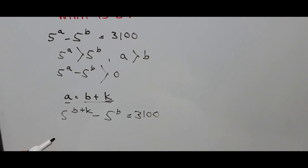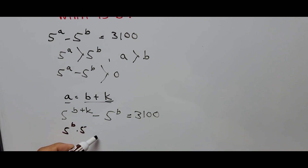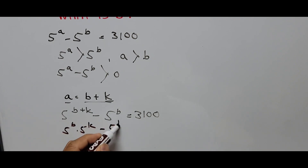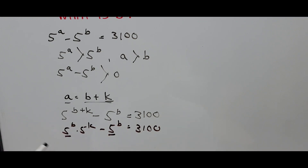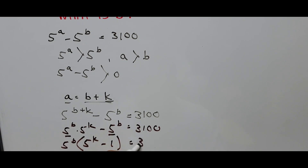This equation can be rewritten as 5 raised to B times 5 raised to K, minus 5 raised to B equals 3100. From here we can factor this out: 5 raised to B times the quantity (5 raised to K minus 1) equals 3100.